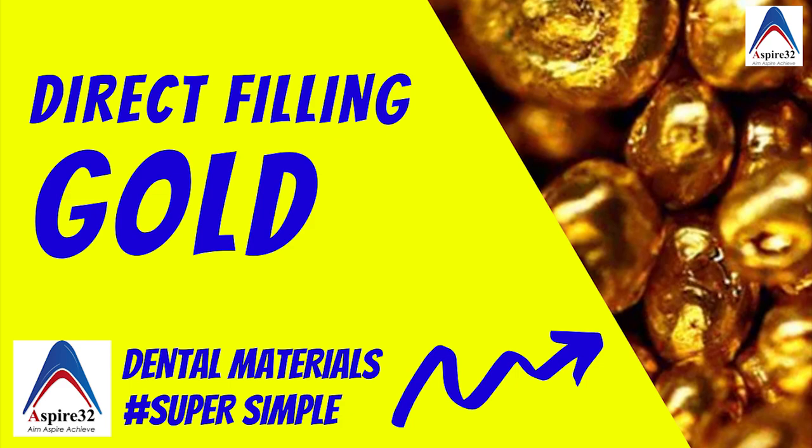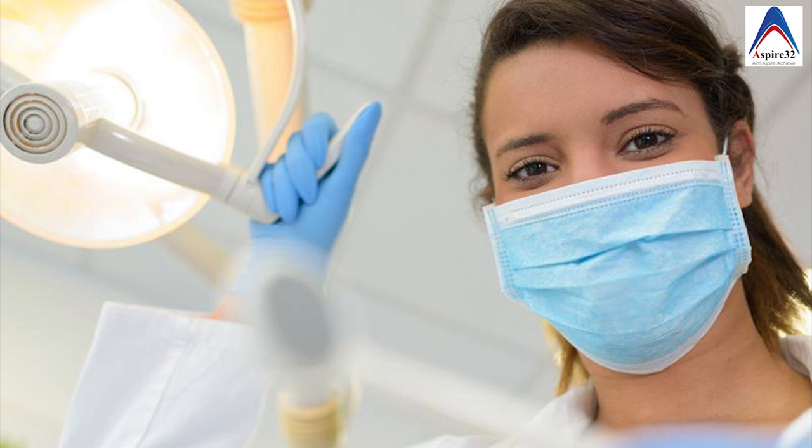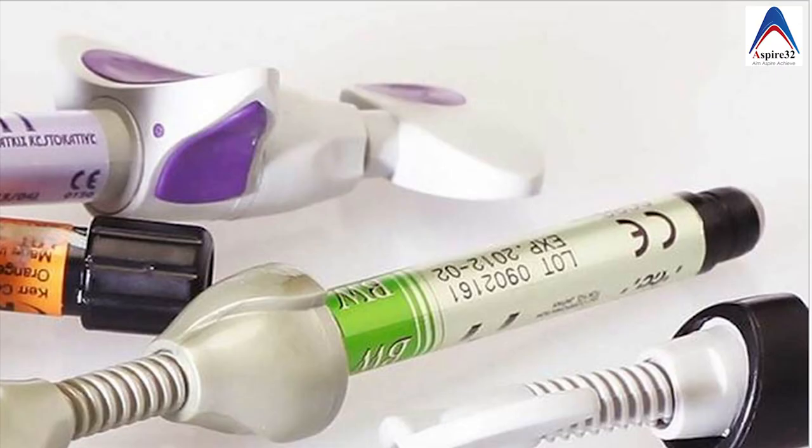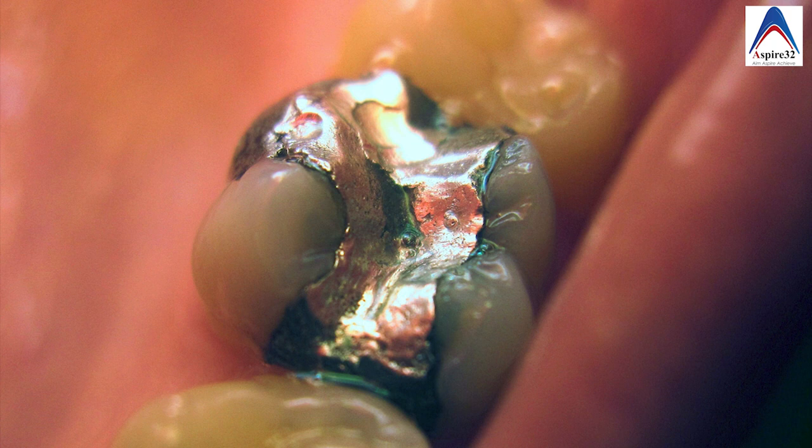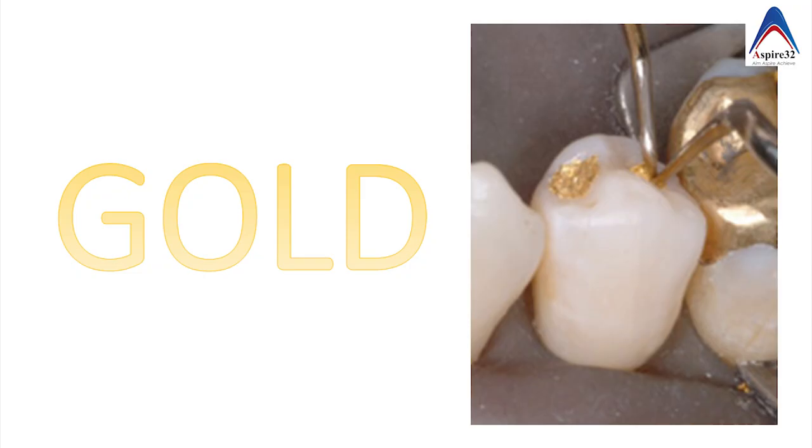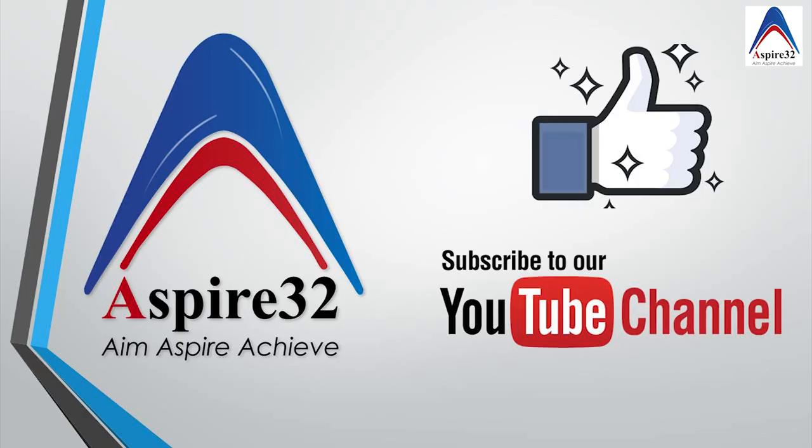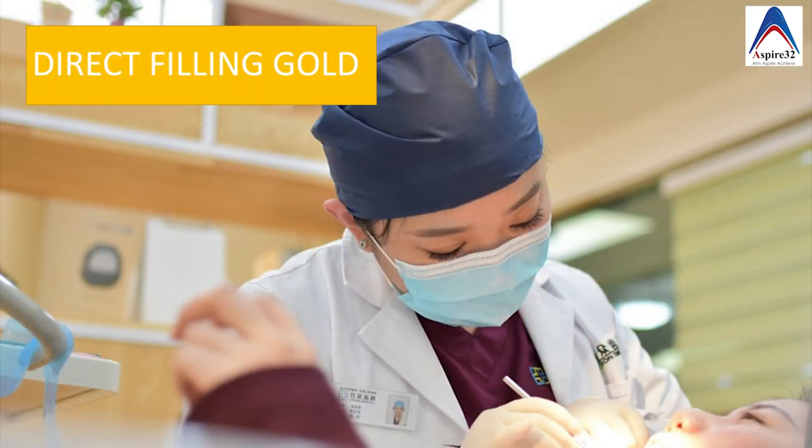If you check all the dental materials which we use routinely they are actually the modified form from the main composition. Take the composite, it's a resin but with fillers and coupling agents and lot of additions. Same with the amalgam which has the alloy but needs mercury for setting reaction. But when you talk about the gold in dentistry it is used in two forms - it can be used directly and it can be used in a alloyed form. And that's the specialty of the gold that you can use it as a restorative material on your chair side without any modification.